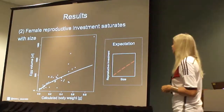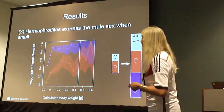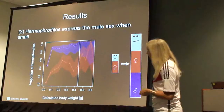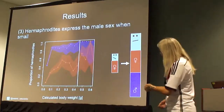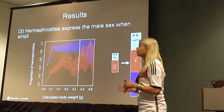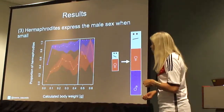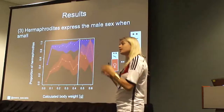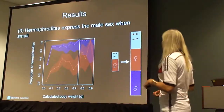Secondly, female reproductive investment also saturated with size, however to a far lesser degree, and this is actually in concordance with our expectation. Here we have egg volume as a measure of female reproductive investment. Lastly, we found that hermaphrodites express the male sex when they are small. This figure shows the proportion of hermaphrodites which express either sex on the y-axis, and calculated body weight on the x-axis. At a small size, there are many more hermaphrodites who are only male. But as the hermaphrodites grow, they express both the male and female sex at nearly 100%.